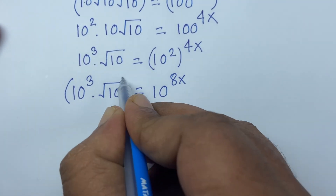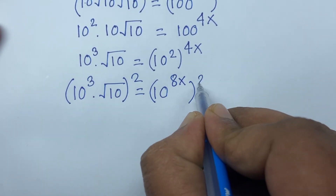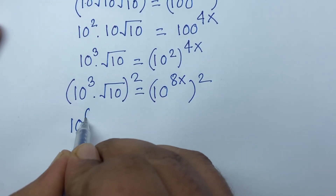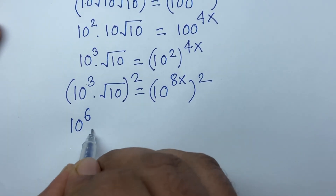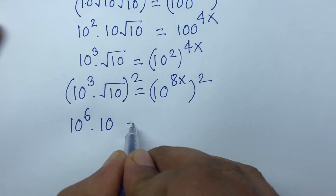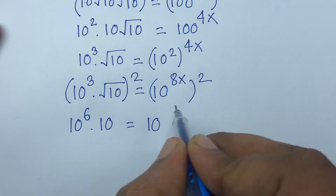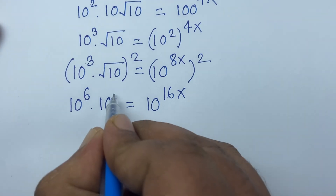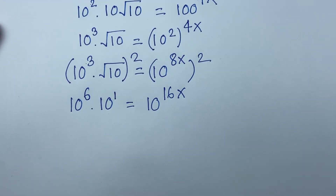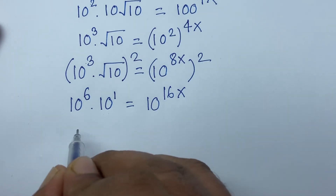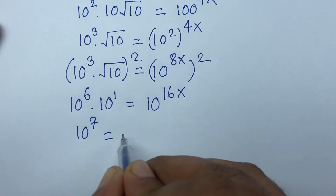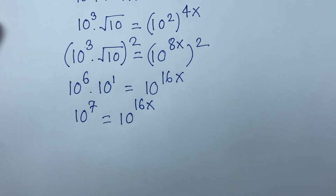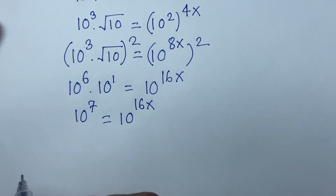I use both sides whole square again. Here is 10 to the power 3 squared, which is 10 to the power 6, and the square root cancels to give 10 on the left. So it becomes 10 to the power 7 is equal to 10 to the power 16x. According to exponential laws, since the bases are equal, the exponents are equal.